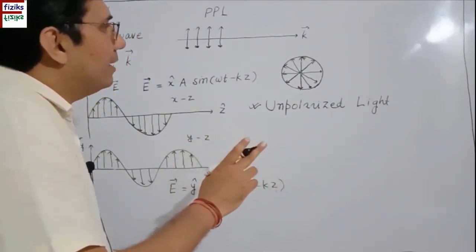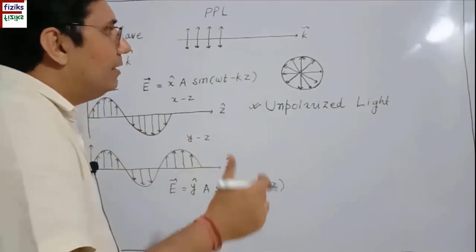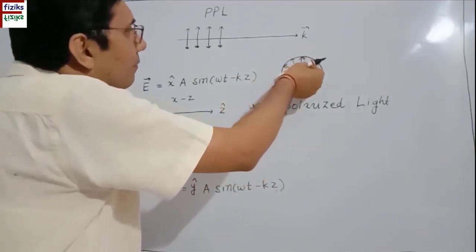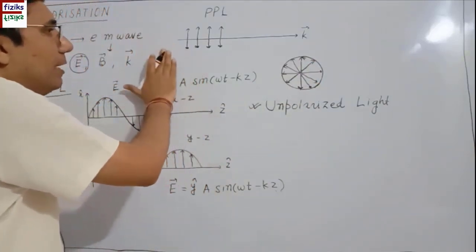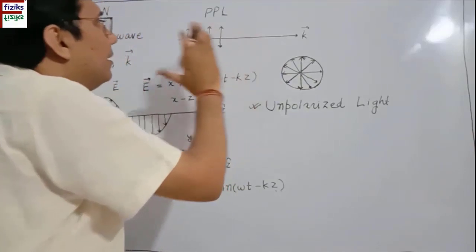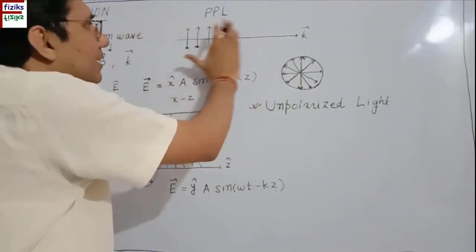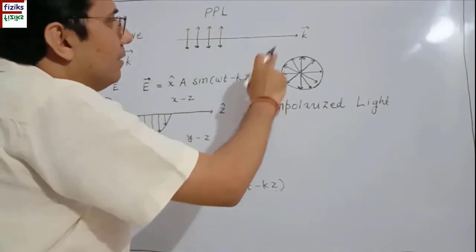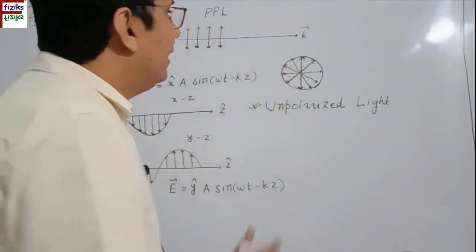We can say unpolarized light is a superposition of a large number of plane polarized lights whose electric vectors are in random directions. However, all these electric vectors are perpendicular to the K vector, but there are electric vectors in all possible directions. So in plane polarized light, the electric vector is confined in a plane, and in unpolarized light, electric vectors are oriented in all possible directions.